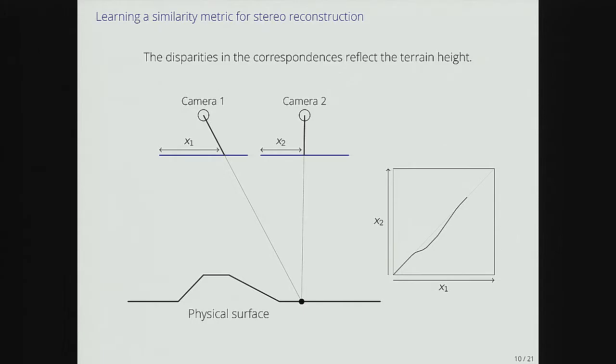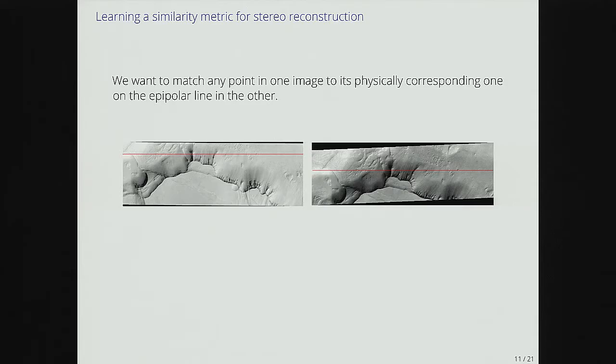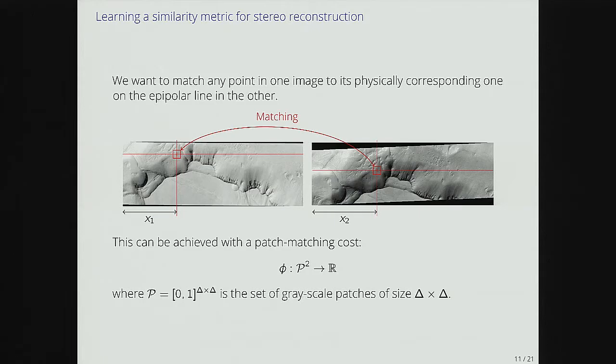Bottom line, you can forget everything I've said. The only thing you need to understand is: our goal is you give me two images of Mars that correspond roughly to the same part of the planet, and given any point in the first image, I want to find its matching in the second image. I know before doing anything that this point has to be in a certain line. If I'm able to do this, I have x1 and x2 and can compute the z on the planet.